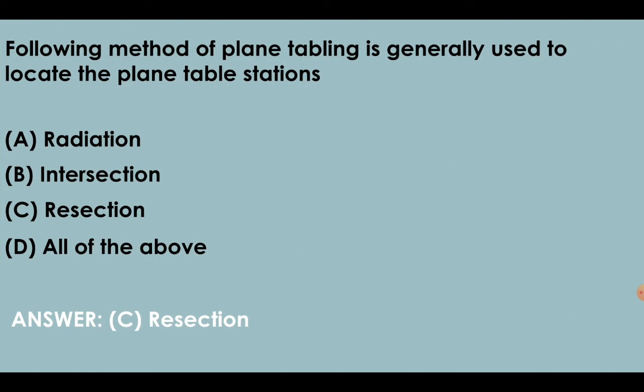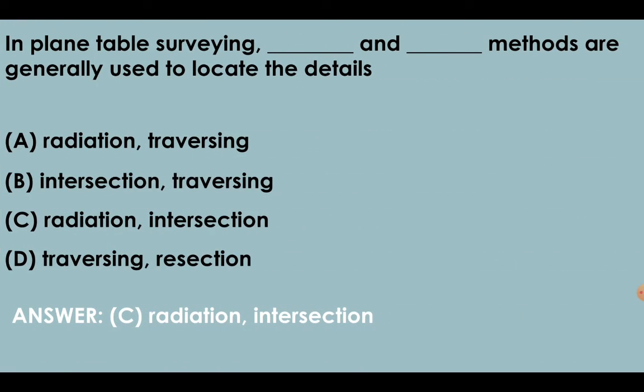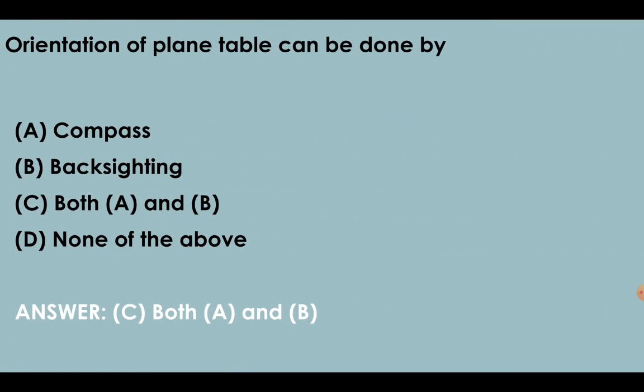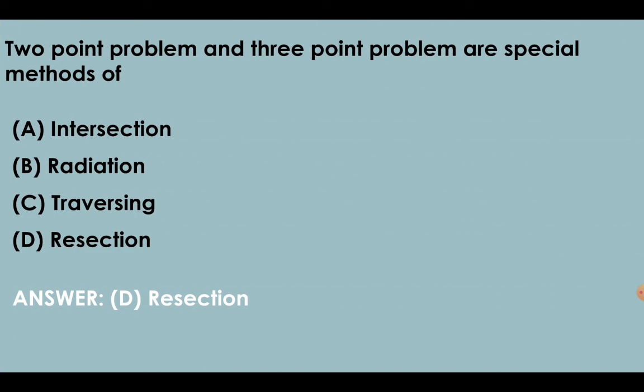Resection is the method of plane tabling generally used to locate the plane table station. In plane table surveying, radiation and intersection methods are generally used to locate the details. Orientation of plane table can be done by compass and backsighting. Two point problem and three point problem are special methods of resection.